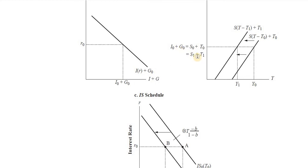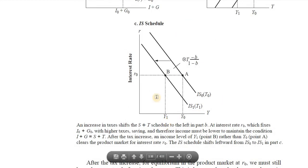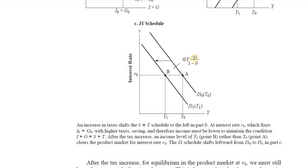S1 is a different level of saving from S0. Taxes have risen from T0 to T1, income has fallen from Y0 to Y1, saving has fallen from S0 to S1, but S1 plus T1 equals I0 plus G0. At R0, the new income is Y1, so the IS curve has shifted leftward from point A to point B.